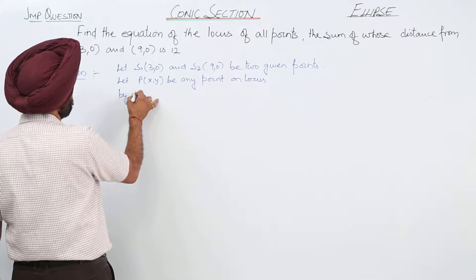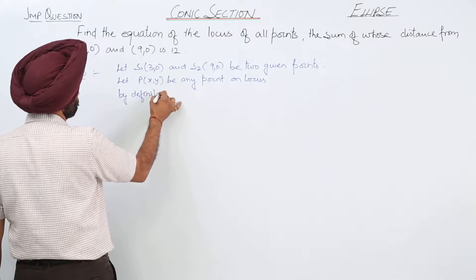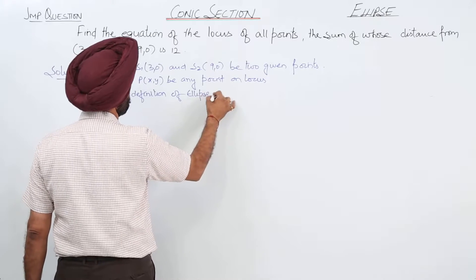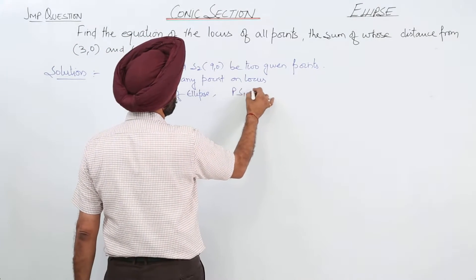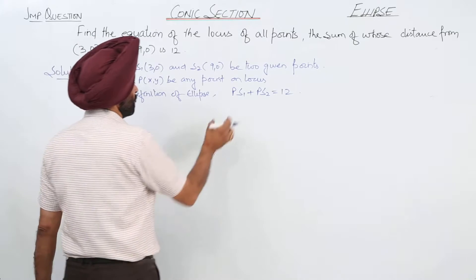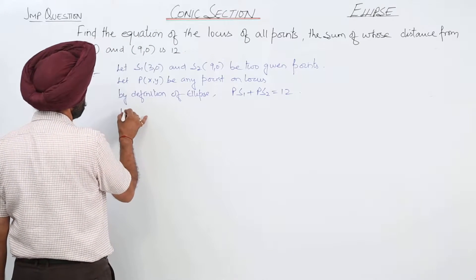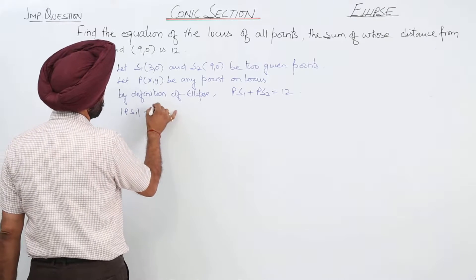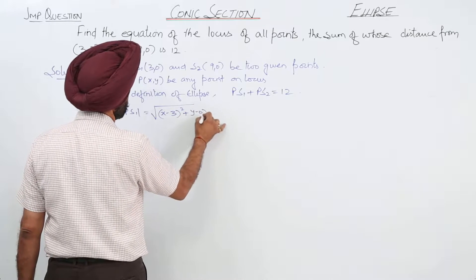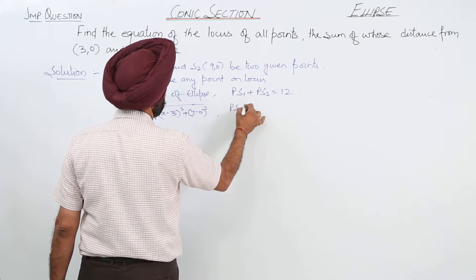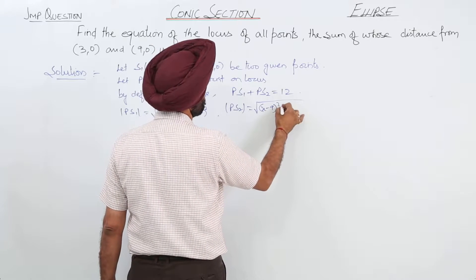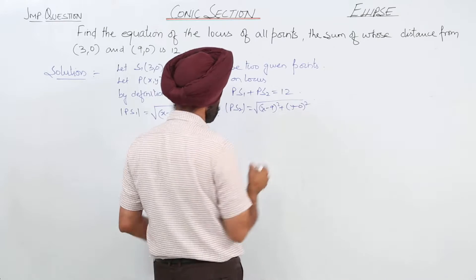By definition, PS1 plus PS2 is equal to 12. Now the distance PS1 is the square root of (x minus 3) whole square plus y minus 0 whole square. PS2 is equal to square root of (x minus 9) whole square plus y minus 0 whole square.